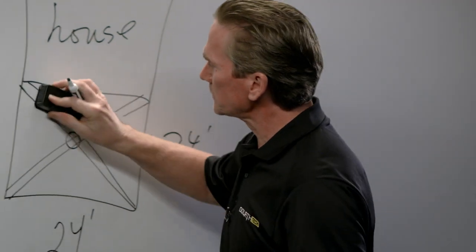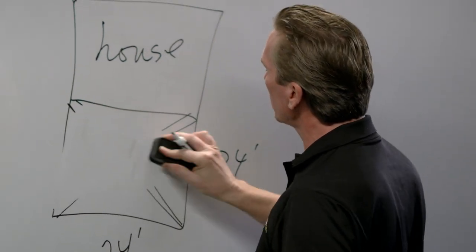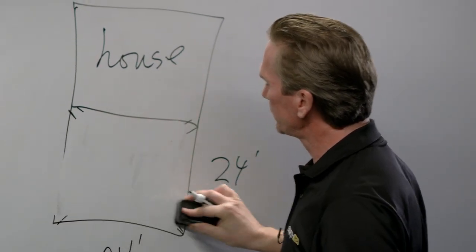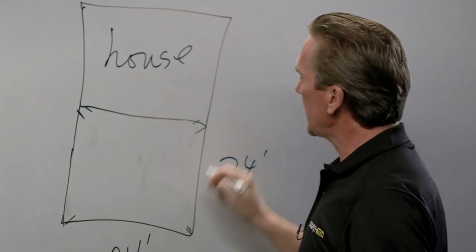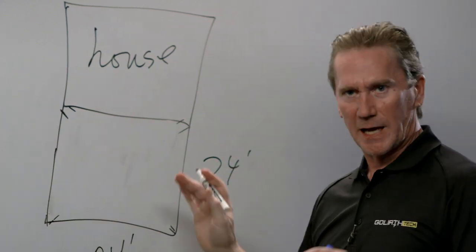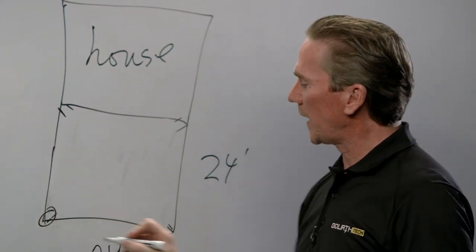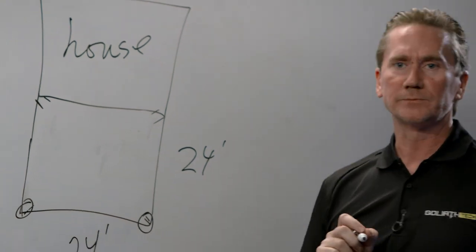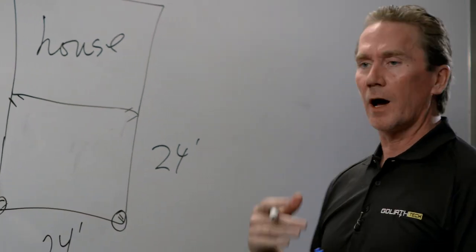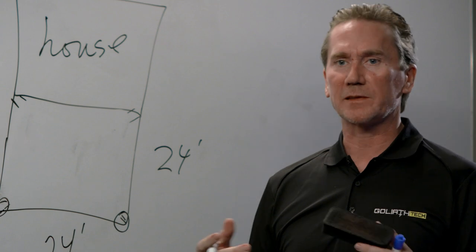If we went a little farther with this example, we could easily support this deck again with only two piles, one on each corner. Again, not an issue for the helical pile because the capacities are so high.